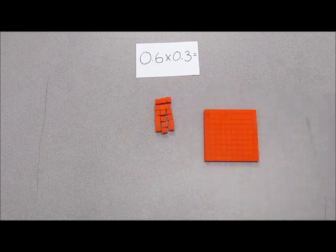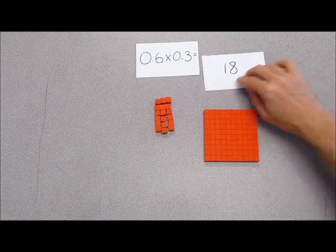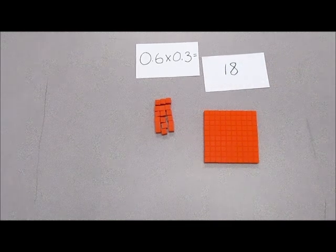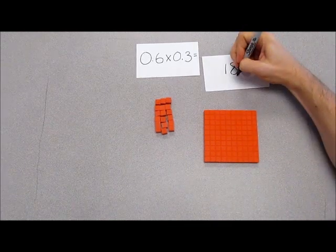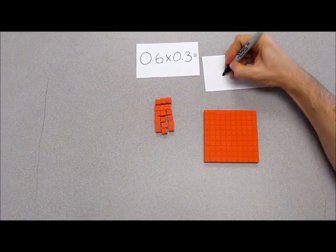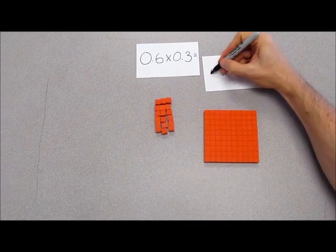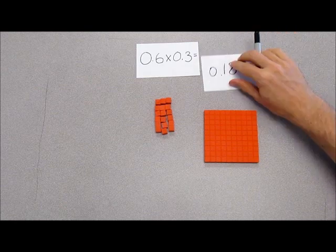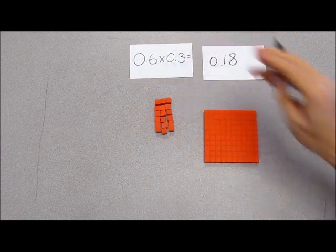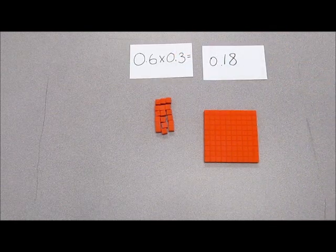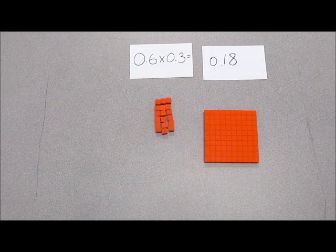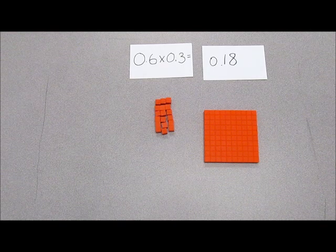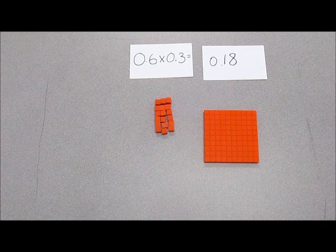That gives us eighteen hundredths. So the expression six tenths multiplied by three tenths is equivalent to eighteen hundredths.